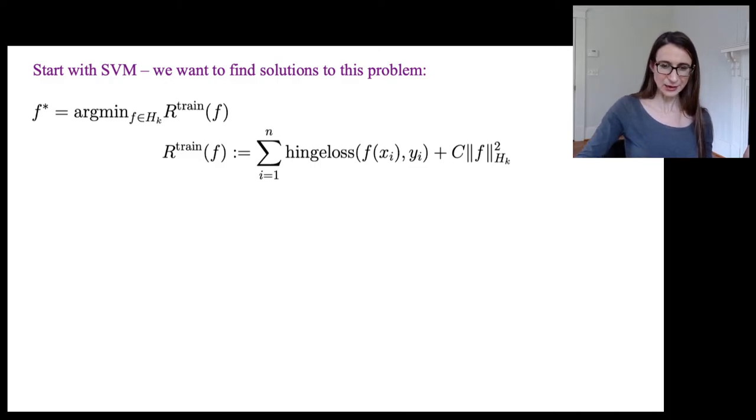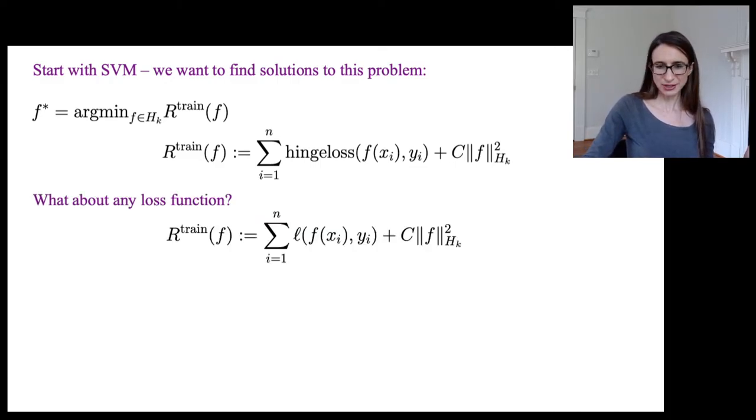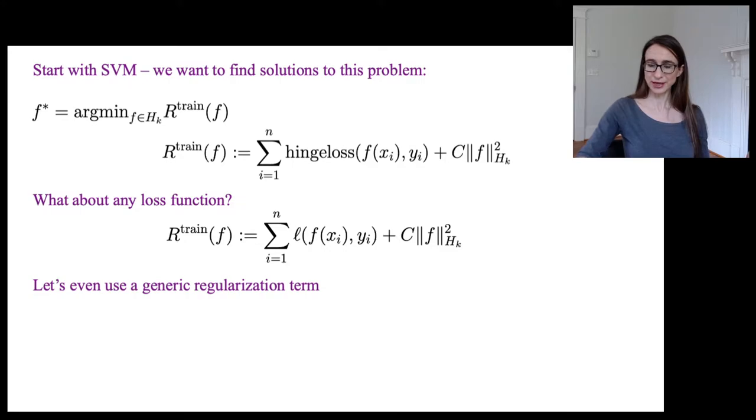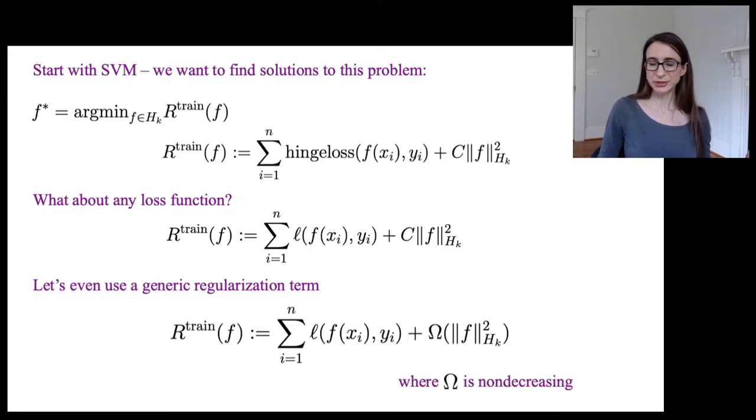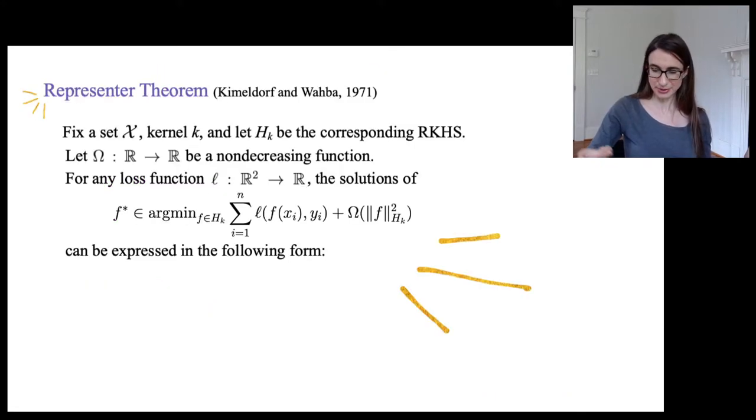Now, I'm just going to make this slightly more general. Let's say any loss function, not just the hinge loss, any loss function. And not only that, let's even use a regularization term that is some non-decreasing function of that norm squared. So this is super general, right? Just any loss function you want, any non-decreasing function of that norm squared. Probably thinking we can't do anything with that, but lo and behold, the representer theorem says we can.